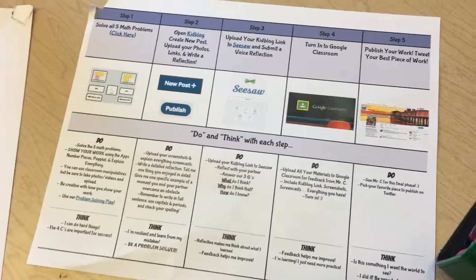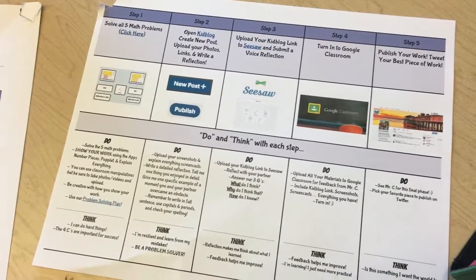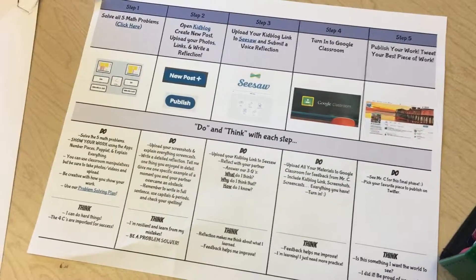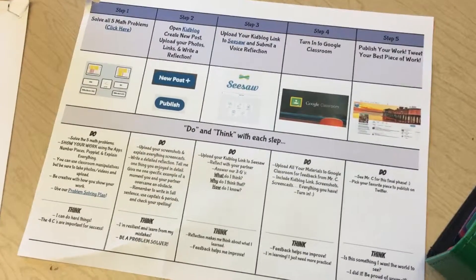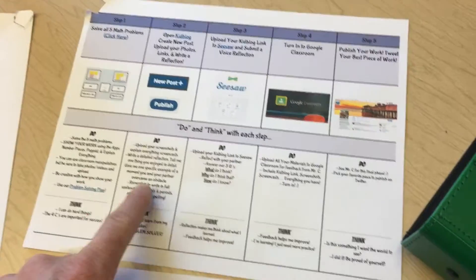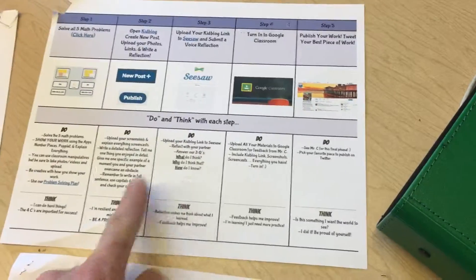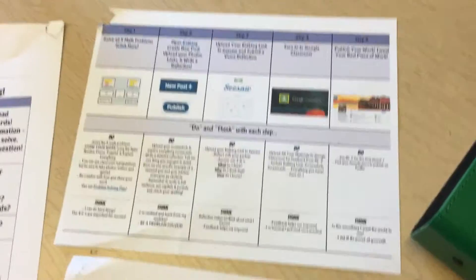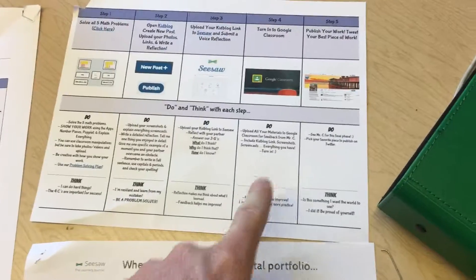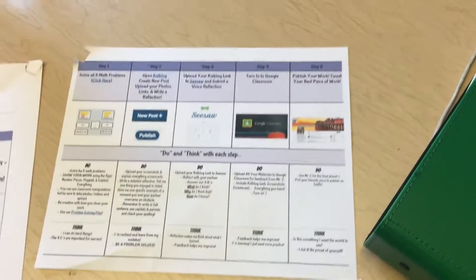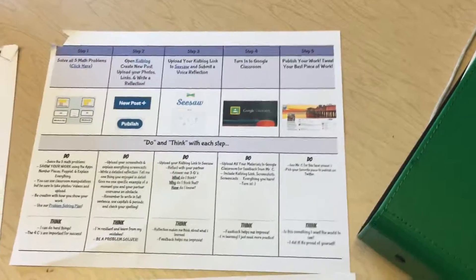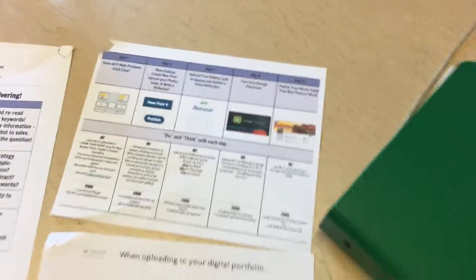When they're done with all five problems, they'll each create a KidBlog post and do a written reflection on their experience. Then they'll upload to the SeeSaw digital portfolio, turn everything in with Google Classroom, and the last step is to publish. They have an entire morning to do this.